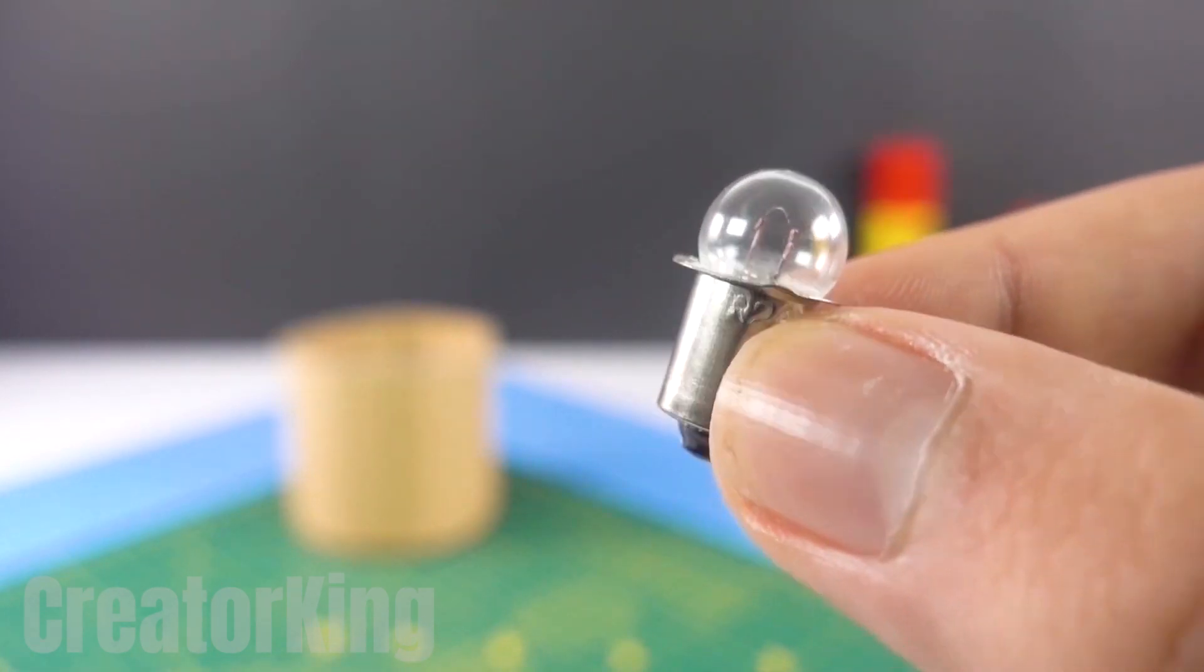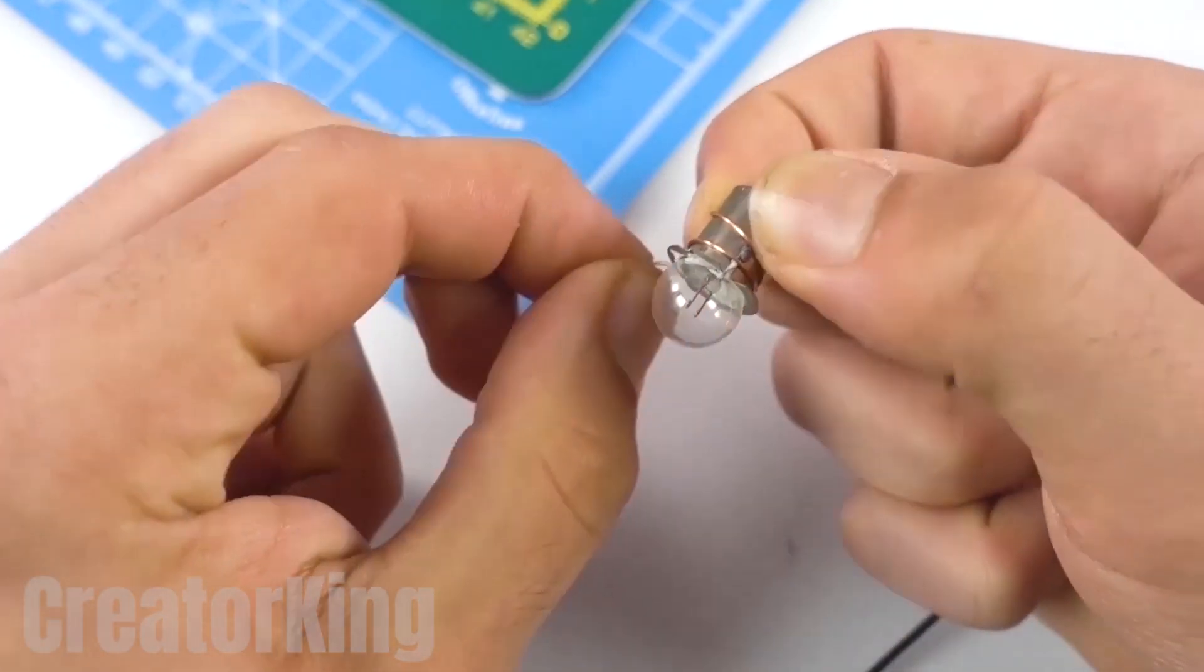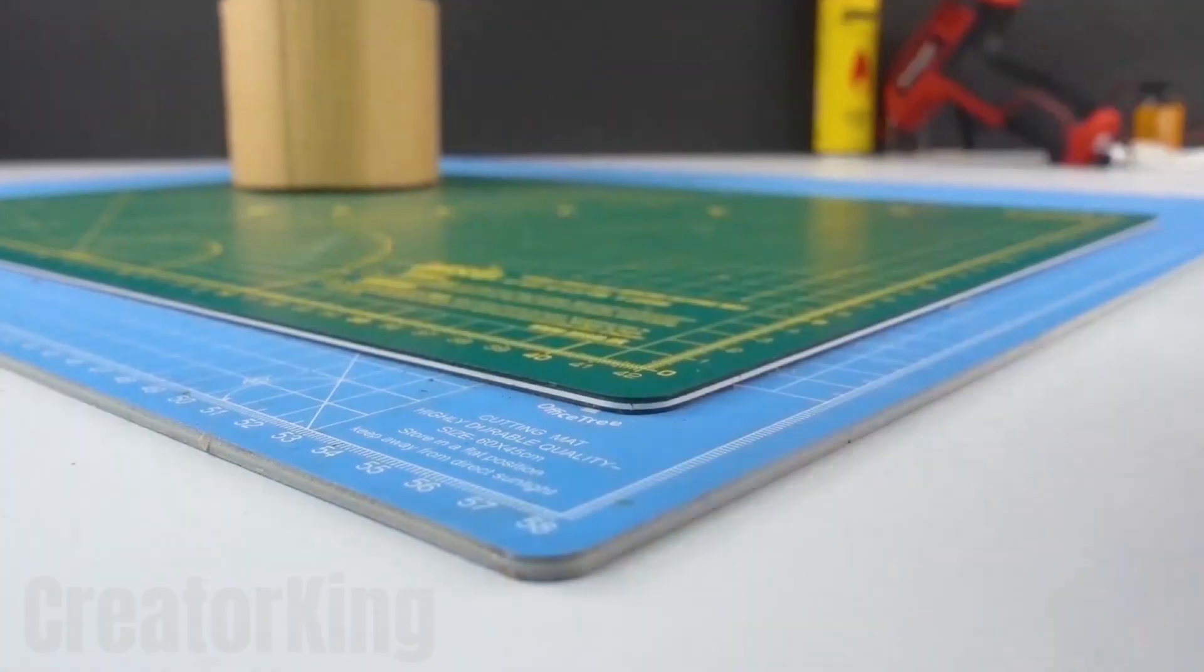We'll need a small light bulb, the kind you see some food trucks decorated with. Wind a copper wire around it, making a mini coil. Take some adhesive tape, preferably insulating tape, to hold the copper wire coil in place.